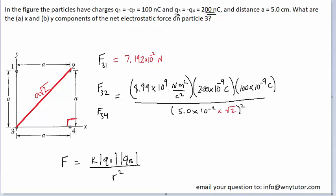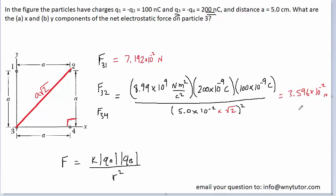Setting up the calculation for F3,2: we use the magnitude of particle 3's charge (200 nanocoulombs) and the magnitude of particle 2's charge. Although particle 2 is negatively charged, its magnitude is still 100 nanocoulombs. For the distance, we use A times the square root of 2, with A equal to 5 times 10 to the minus 2 meters. Processing this gives approximately 3.596 times 10 to the minus 2 Newtons — the force that particle 2 exerts on particle 3.